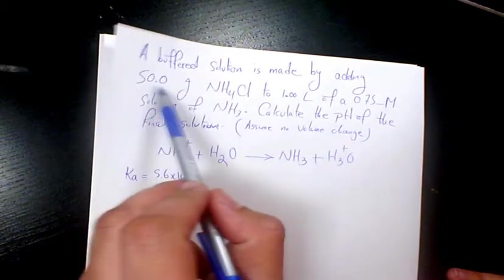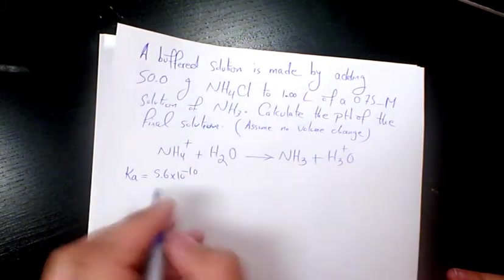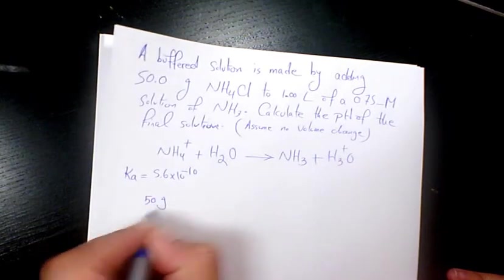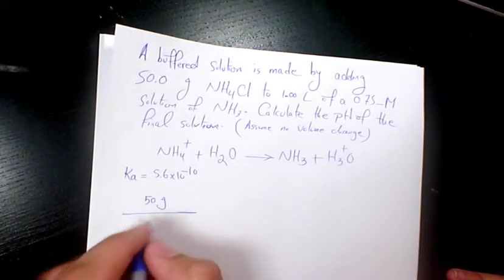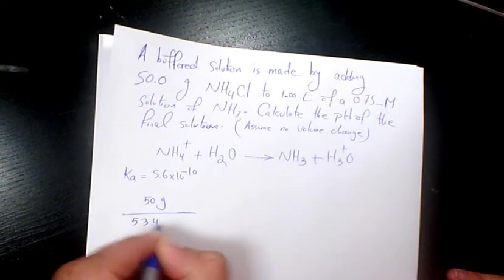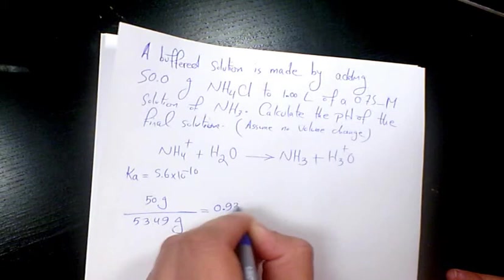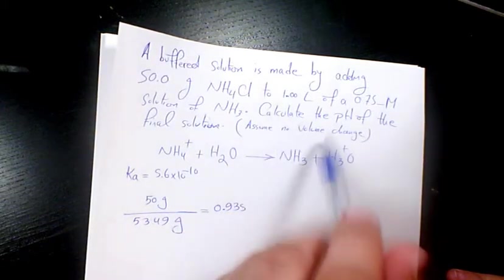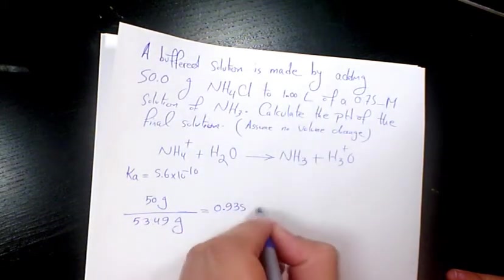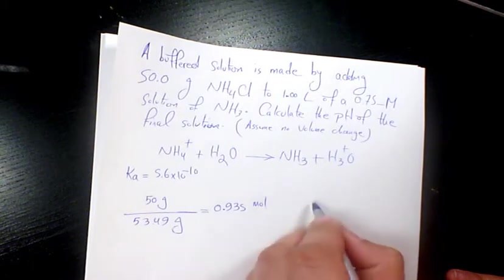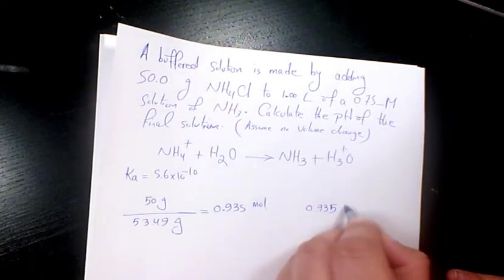The mass of NH4Cl (ammonium chloride) is 50 grams divided by the molar mass of 53.49 grams per mole, giving 0.935 mole. Since we have one liter, the concentration is 0.935 molar.